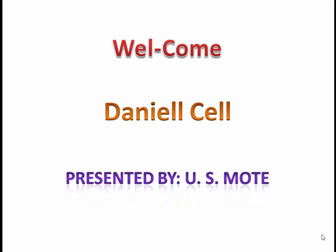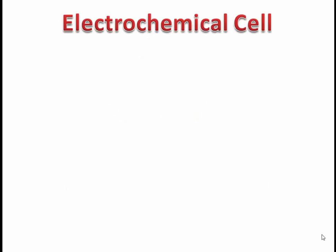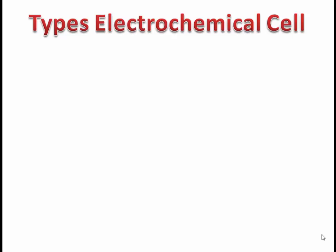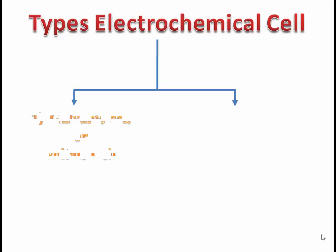Welcome dear friends. In this video we will discuss about construction, working and cell reaction in Daniel's cell. First we see electrochemical cell. An electrochemical cell is a device which converts chemical energy into electrical energy or converts electrical energy into chemical energy. Depending upon working, electrochemical cells are classified into two types: one is galvanic cell or voltaic cell.